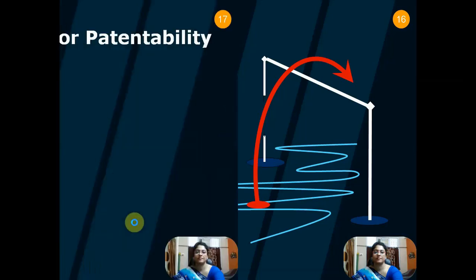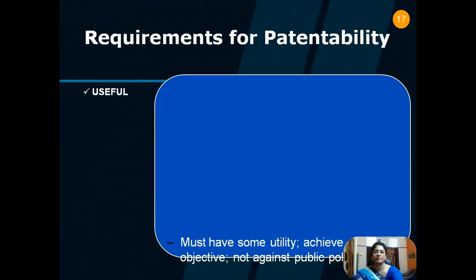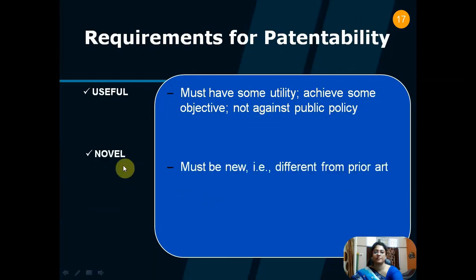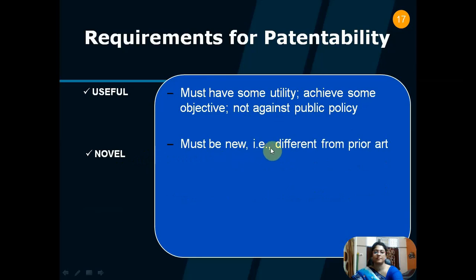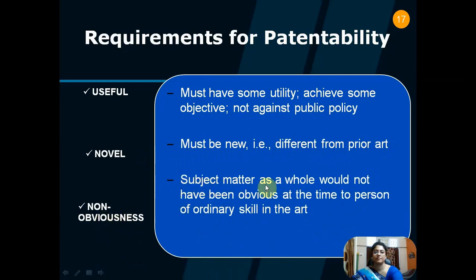Therefore, what are the requirements for patentability? Number one: useful — the patent must have some utility, achieve some objective, and should not be against public policy. Next comes novelty — the patent must be new, i.e., different from prior art. Last but not the least, it should be non-obvious — that means the subject matter as a whole would not have been obvious at the time to a person of ordinary skill in the art.